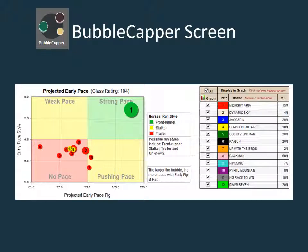The next example is from the recent Queens Plate Stakes, which took place on July 7th. This featured tenth race was at the distance of a mile and a quarter on the all-weather main track. This race is a perfect example of a race with a lone front runner. A lone front runner is easy to spot since it will be the only green bubble on the graph. In this case, number one, Midnight Aria, charts with a clear lead in the early part of the race.